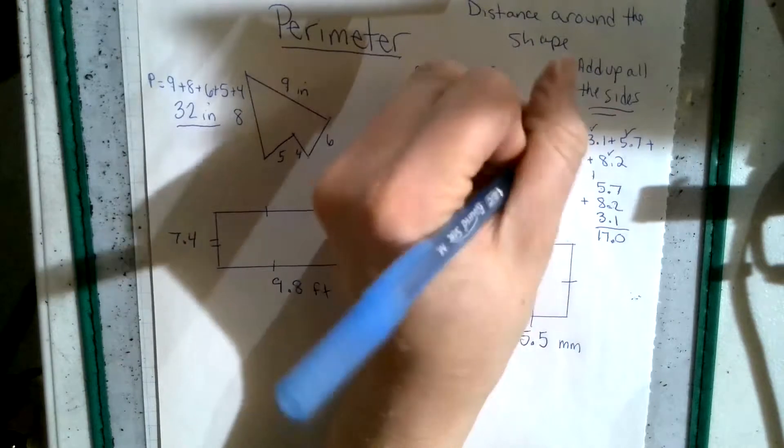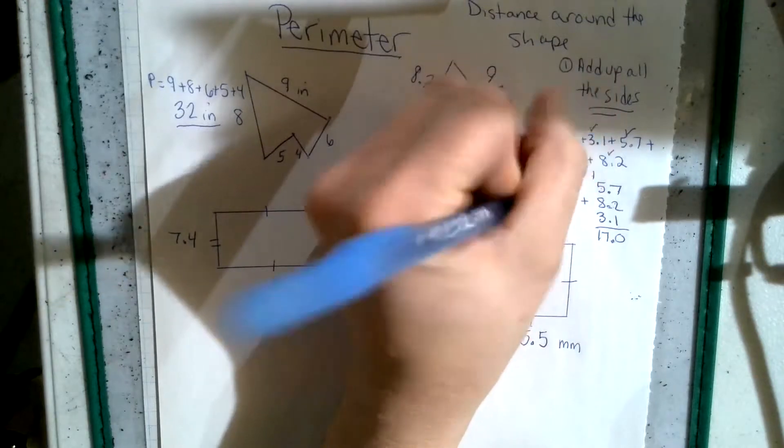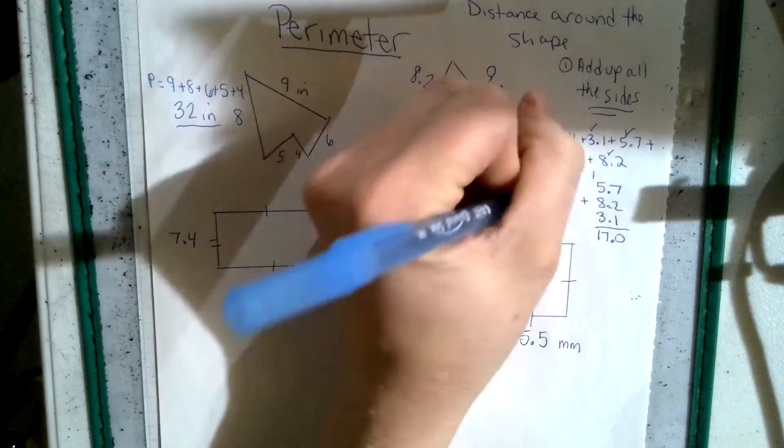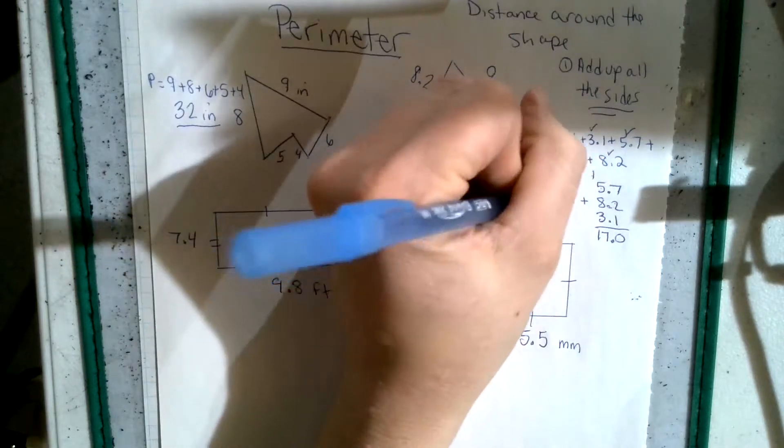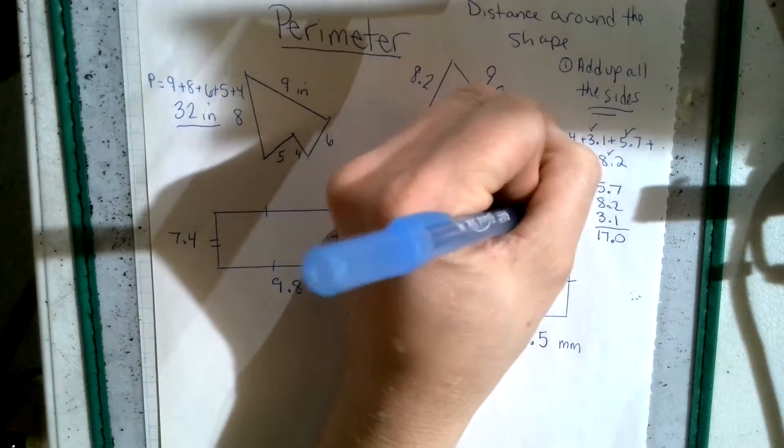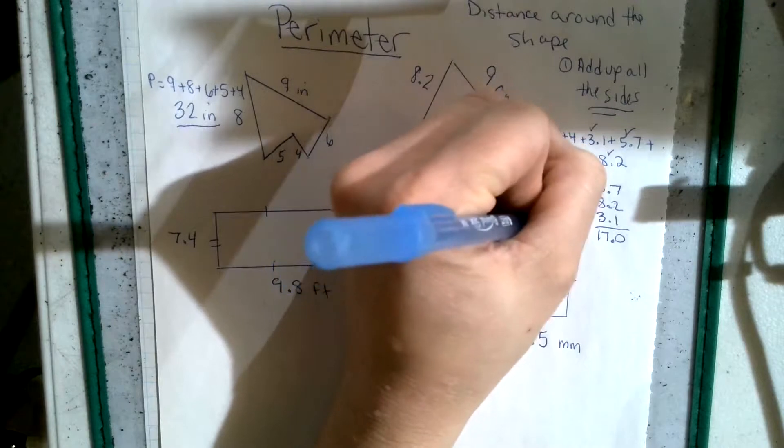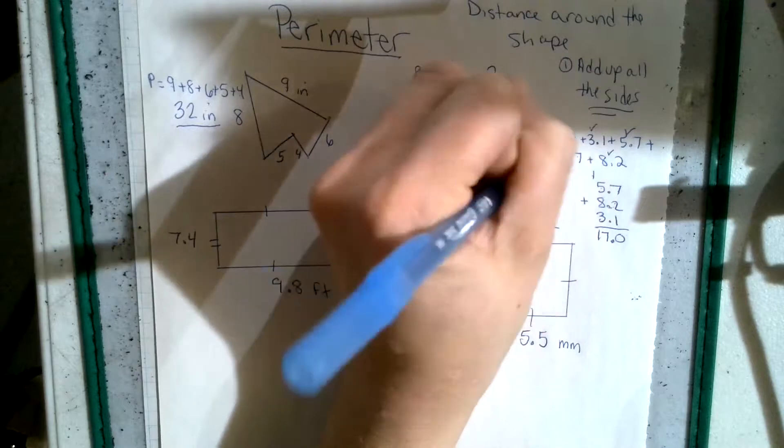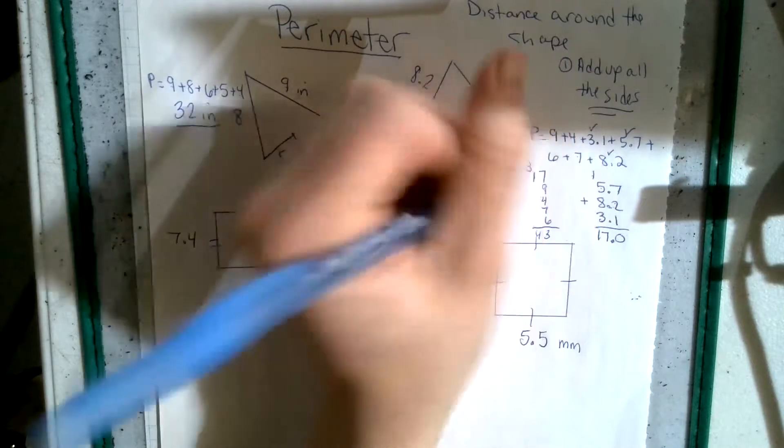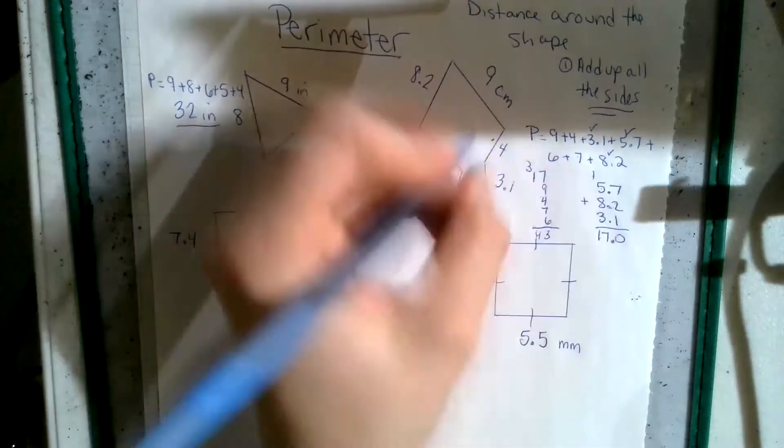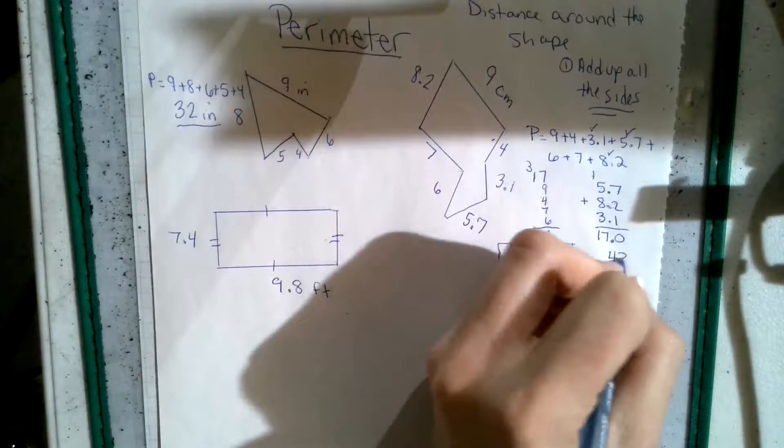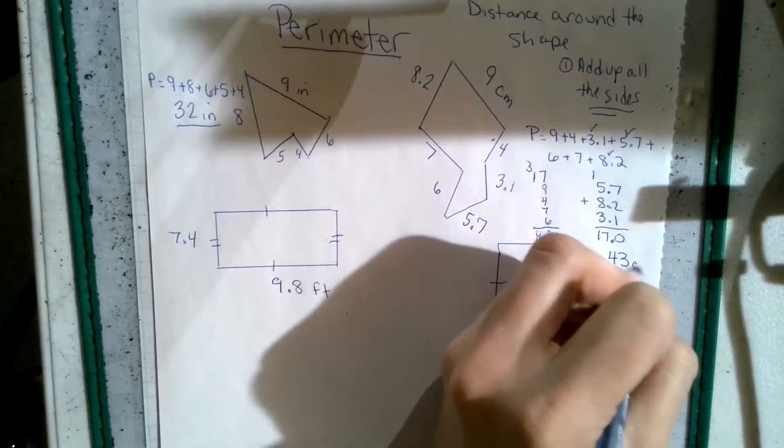So now I've got 17 plus 9 plus 4 plus 7 plus 6. So 9 plus 7 is 16, 17, 18, 19, 20, 27, 28, 29, 30, 31, 32, 33. Put a 3, carry a 3. So we get 43. So this shape is 43.